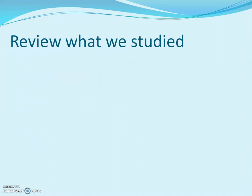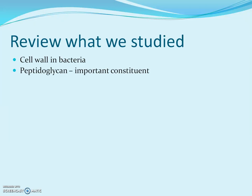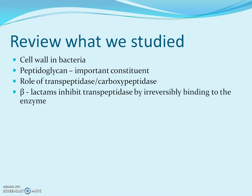We will also explain the importance of the beta-lactam ring with respect to its mechanism of action, and identify and correlate the variable groups and their ability to enhance or reduce activity and stability of penicillins. In brief review: bacteria have a cell wall not present in humans; peptidoglycan is a very important constituent of the cell wall providing rigidity and strength. Transpeptidase plays a key role in peptidoglycan formation, and beta-lactams inhibit transpeptidase by irreversibly binding to the enzyme, stopping cell wall synthesis and causing lysis.